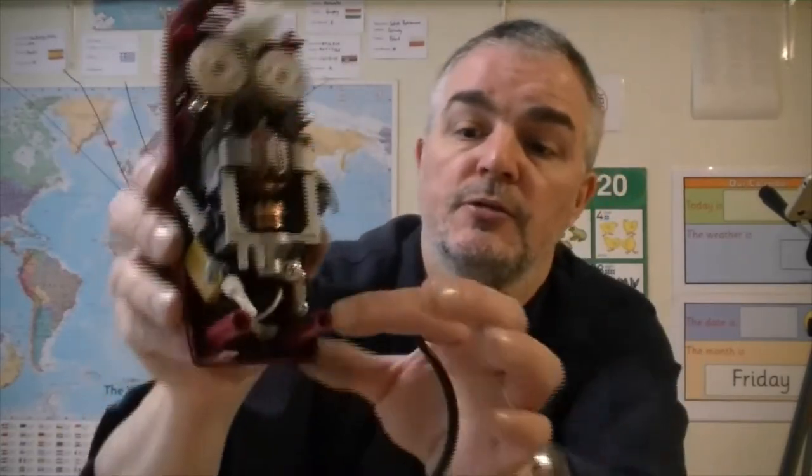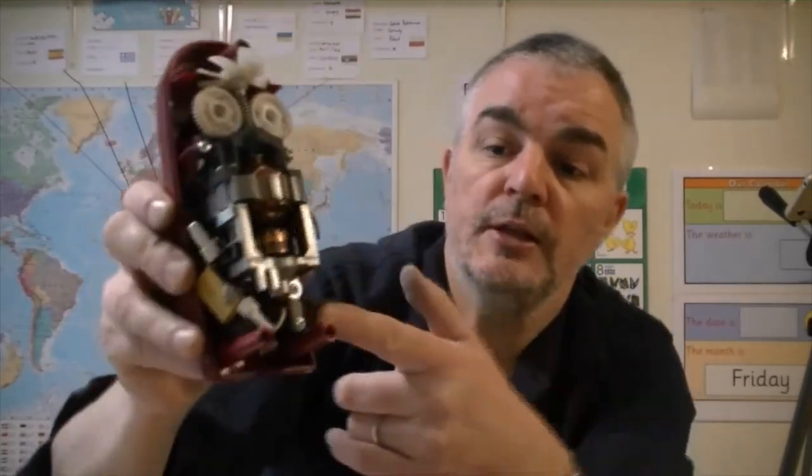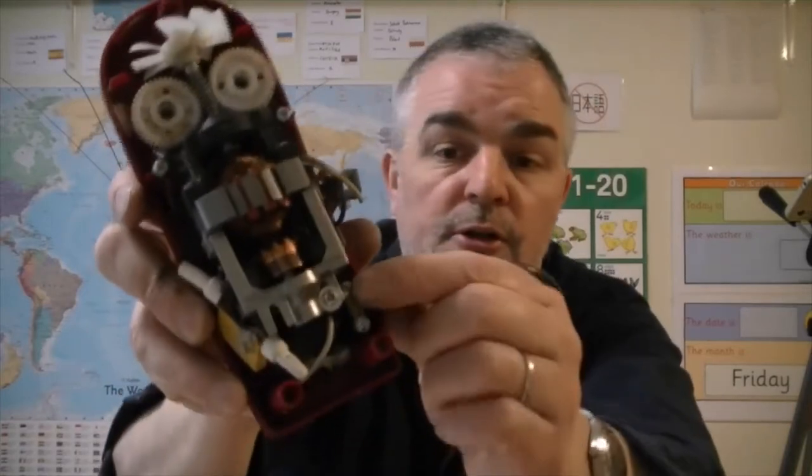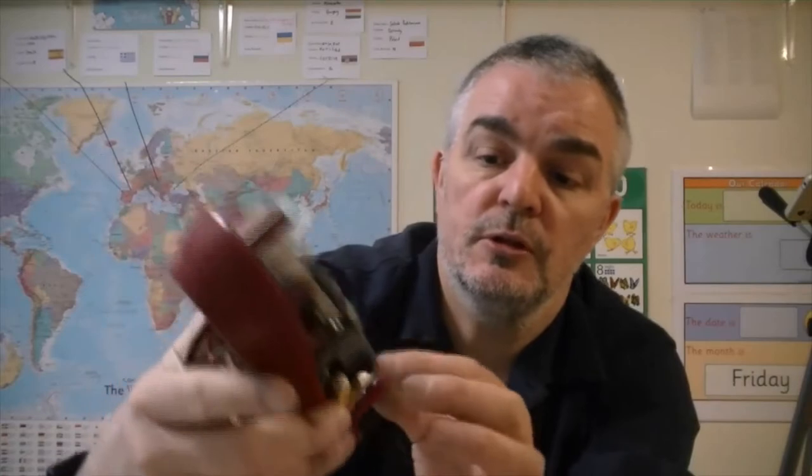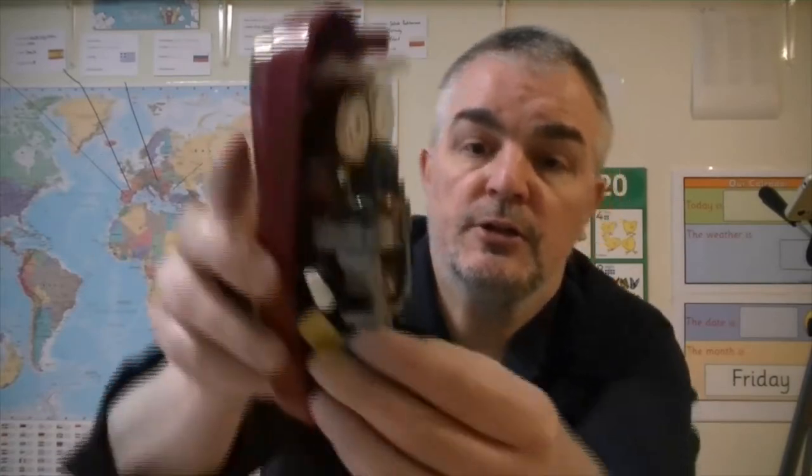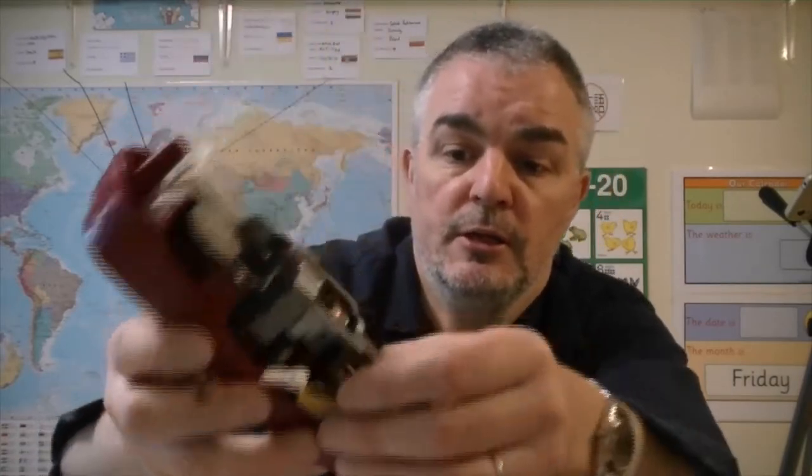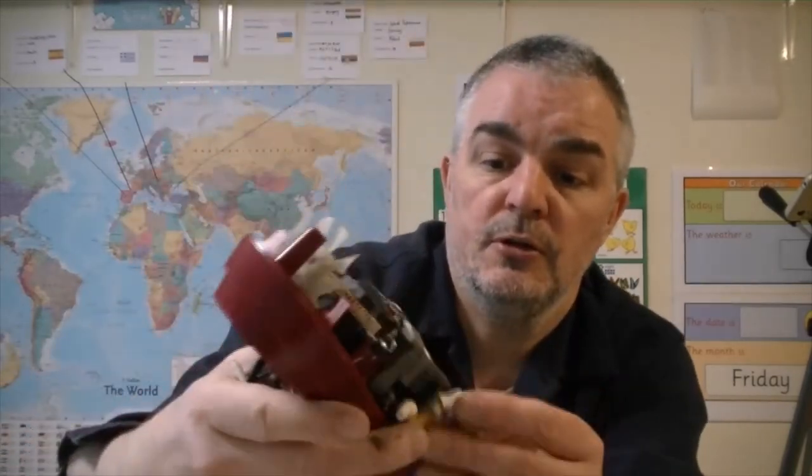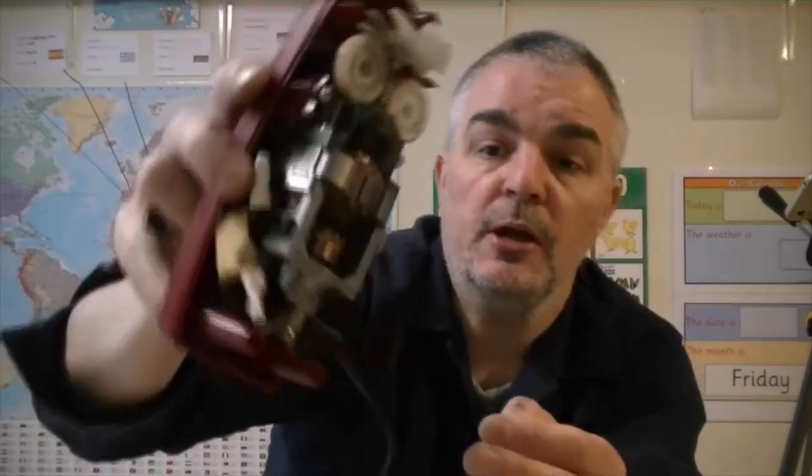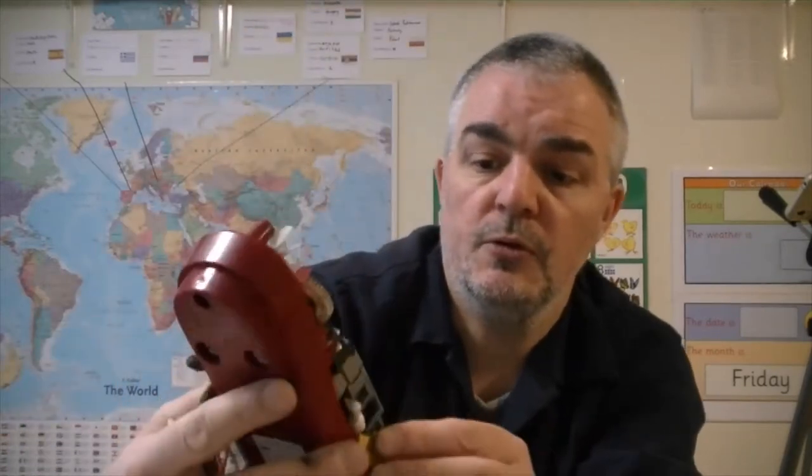And we also have a power cord coming into the casing there, held on by a little grip to stop us pulling the cord out in normal use. Various capacitors to stop the interference with other electrical equipment. You don't want your television going blurry while you're making your cakes.